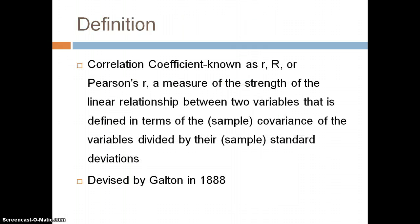Some more definitions. The correlation coefficient, known as r — little r, or Pearson r — is a measure of the strength of the linear relationship between two variables, defined in terms of a sample variance divided by the sample standard deviation. This concept goes back to 1888.